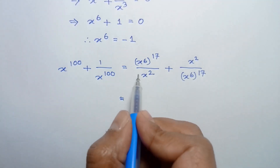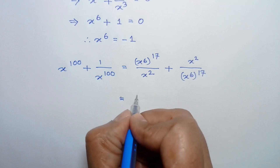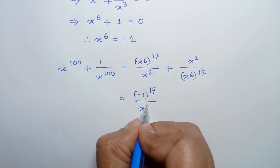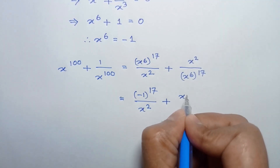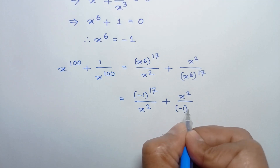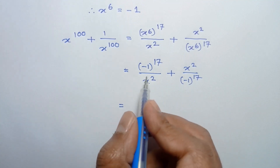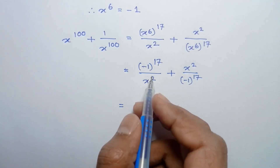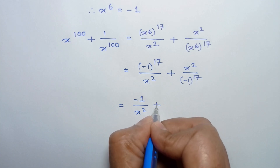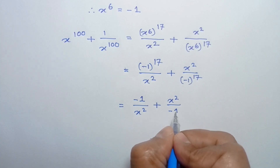x to the power 100 plus 1 over x to the power 100. The value of x to the power 6 is negative 1, so substituting this value, we can write negative 1 to the power 17 over x squared plus x squared over negative 1 to the power 17. Since negative 1 to the power 17 is negative 1, this becomes negative 1 over x squared plus x squared over negative 1.